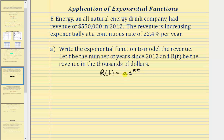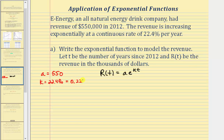Where a is the initial or starting amount, k is the continuous growth rate, and t is the number of years since 2012. We need to be careful because r of t is in thousands of dollars, so a is not 550,000 — a equals 550. The continuous growth rate is 22.4%, so k equals 0.224 as a decimal. k must always be expressed as a decimal.